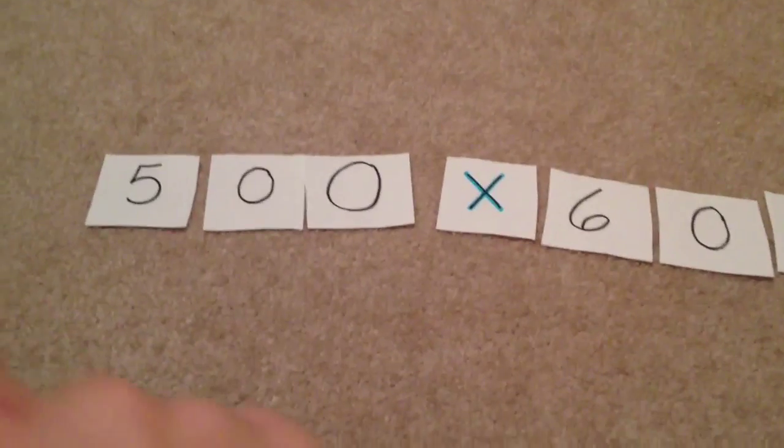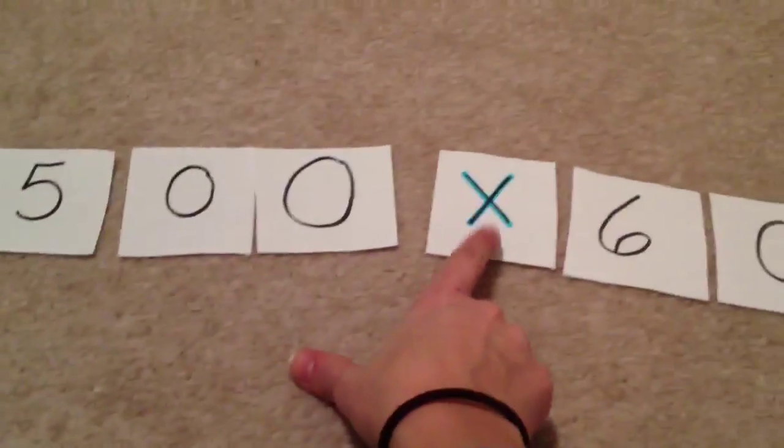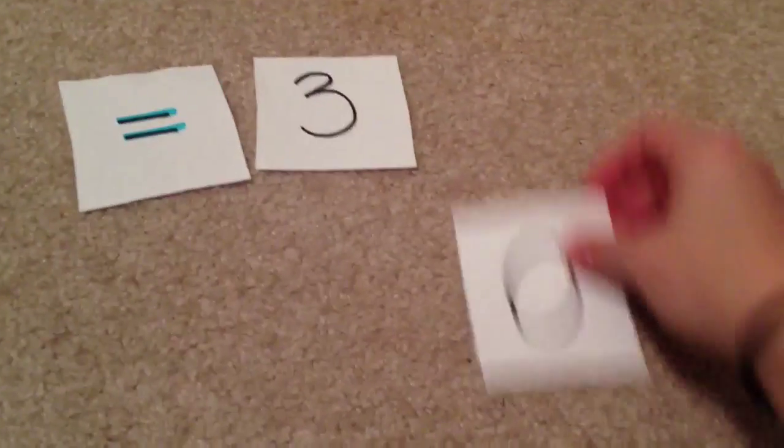Another example: you can see 500 times 60, and we still have this original one of 5 times 6. We steal the zeros. So 5 times 6 is 30.